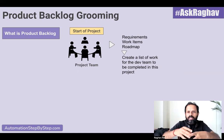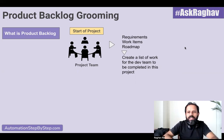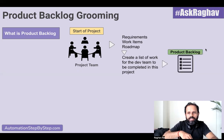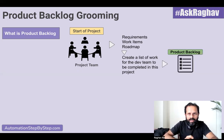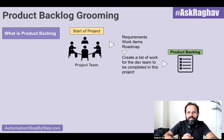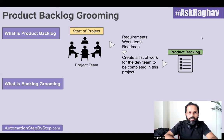And they create the complete list of items. And this list that we have to cover completely in this project is called the product backlog. So this is a list of items, a list of work to be completed in that particular project.